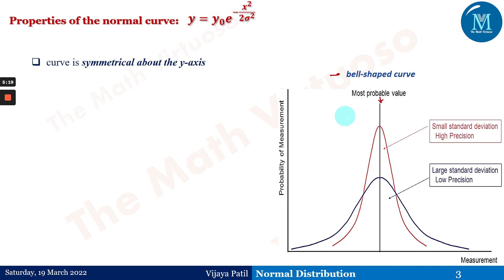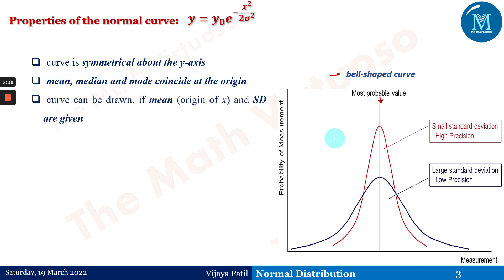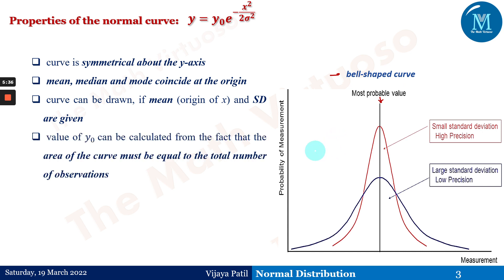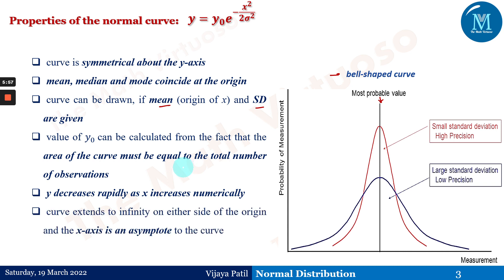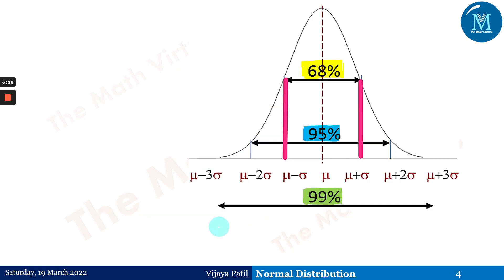The curve is symmetrical about the y-axis. The mean, median, and mode coincide at the origin. The curve can be drawn if the mean and standard deviation are given, which is why μ and σ are known as the parameters of the distribution. The x-axis is an asymptote to the curve, meaning the curve extends to infinity on either side and never intersects the x-axis.